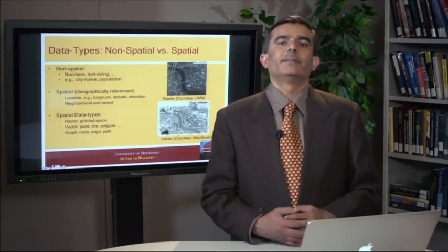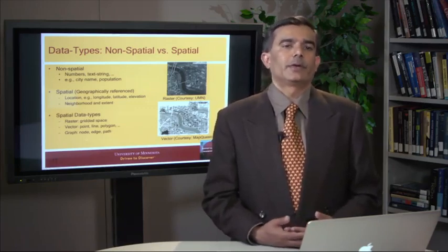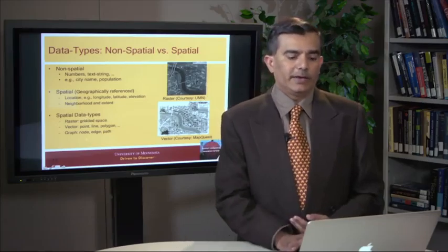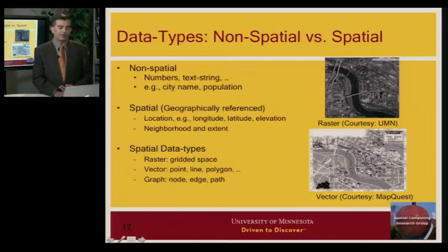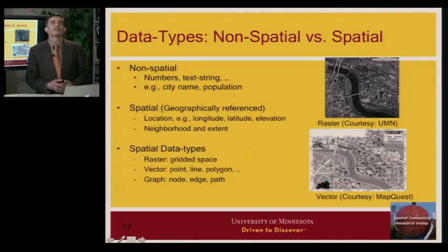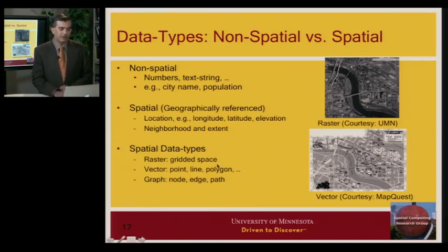A raster data set is similar to what you get from your digital camera, where the area is divided into a uniform grid of columns and rows with pixels. The intersection of a row and column is a pixel — the entire data set may be composed of a thousand pixels in each row and a thousand columns, perhaps a million pixels total. For each pixel, we may specify values such as elevation or reflectance. These are two very common data types and they are both used in spatial data mining.